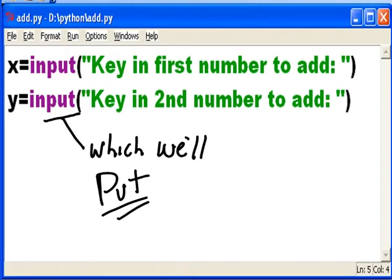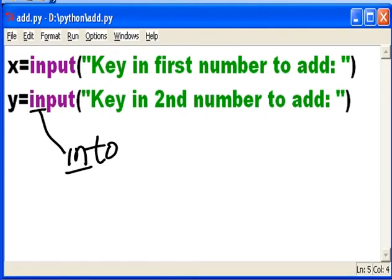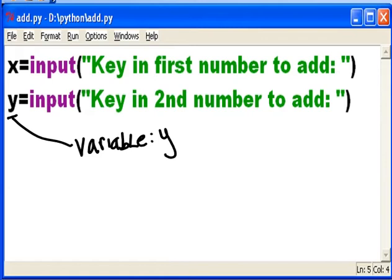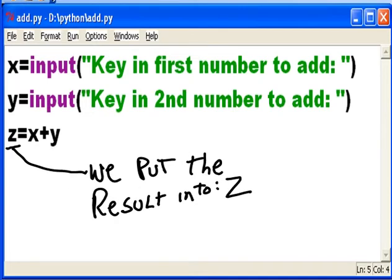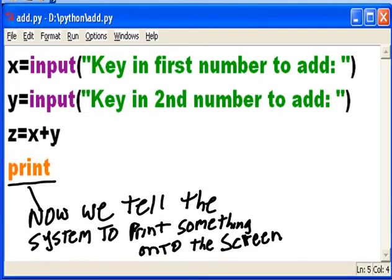Now we tell the user to key in another number which will be put into variable Y. We add up the two numbers and put the result into Z. Now we tell the system to print something onto the screen.